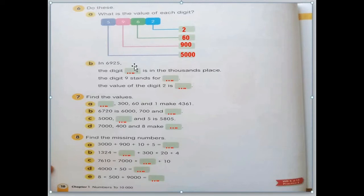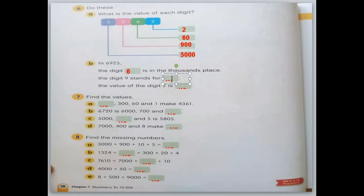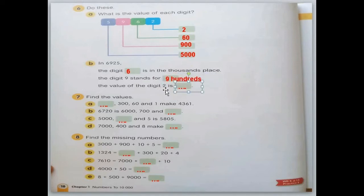Next question B: in 6,925, the digit in the thousands place — let's check: ones, tens, hundreds, thousands — the digit in the thousands is 6. The digit 9 stands for 9 hundreds. For the value of the digit 2: 2 is on the tens place value, tens is followed by one zero, so you write down 2 followed by one zero — you get 20.